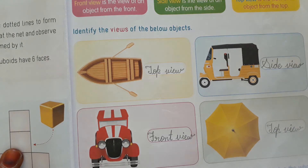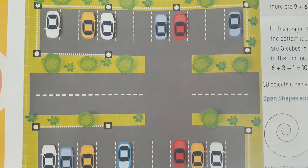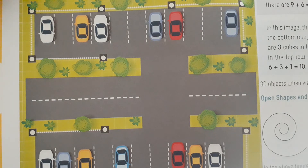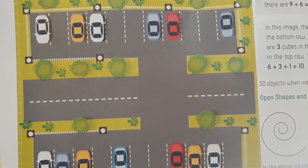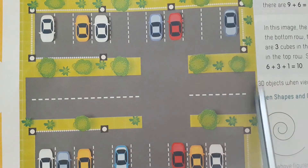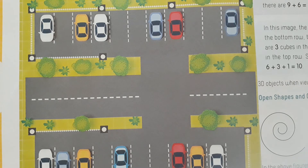Varun and Arun went to a birthday party in a hotel. The party was on the sixth floor. They stepped onto the balcony to see the view from there. When they looked down, they were excited to see many cars in the parking lot. This is a parking lot and so many cars are parked there. Asked Varun: 'Are you able to see all the cars?' Replied Arun: 'Yes.'